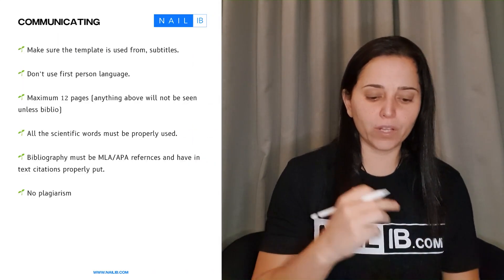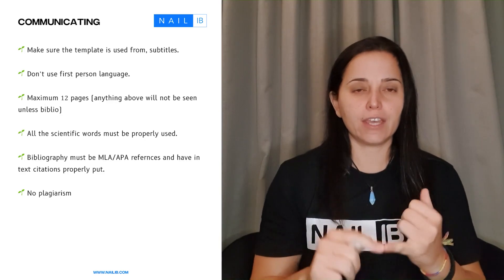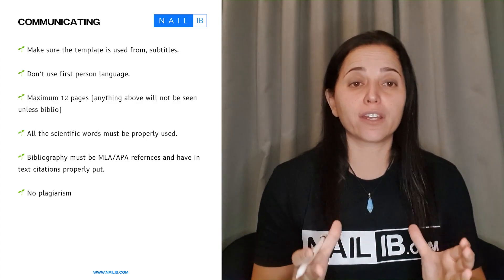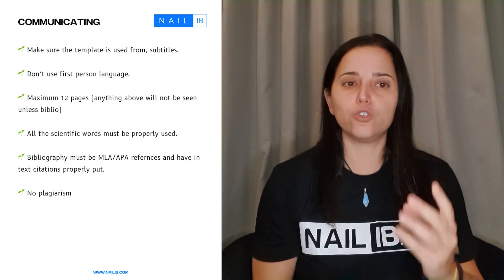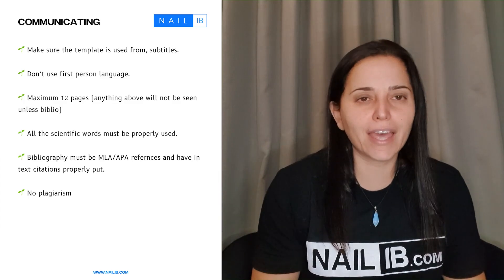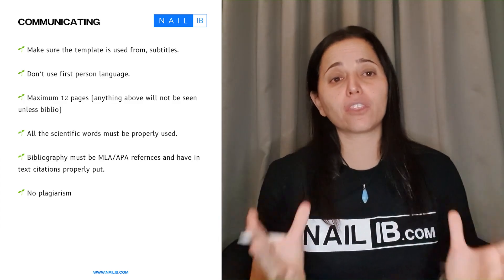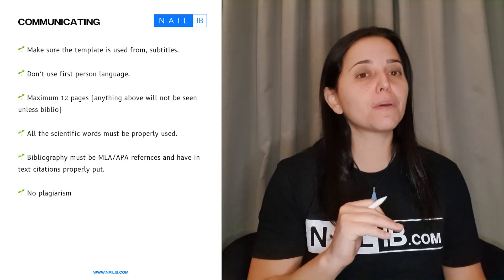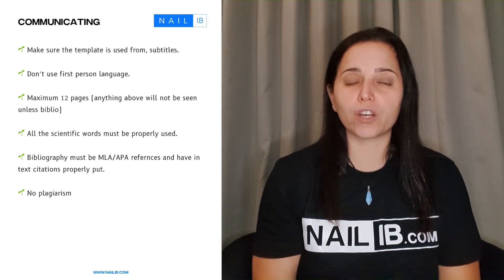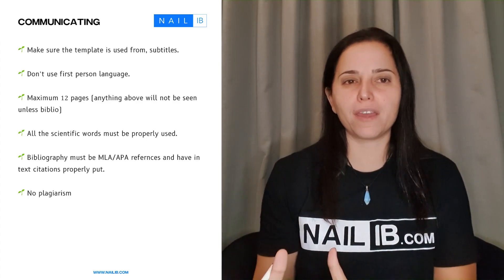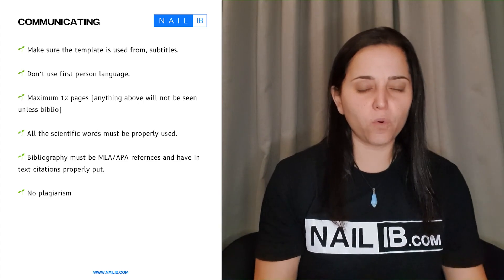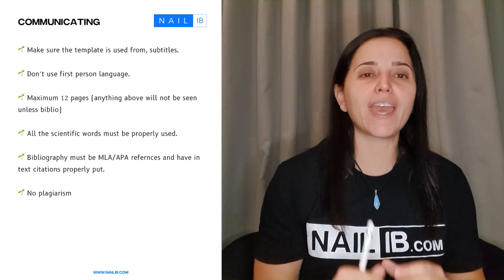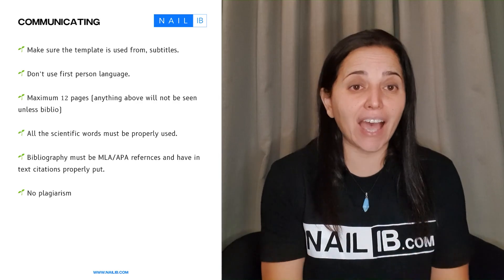When it comes to communication, first there has to be a template with all the subtitles — that's organization and communication skills. Do not use first person language; it has to be in third person. Maximum of 12 pages, however there's a change now which is 3000 words, but you still shouldn't be pushing more than 12 pages. Scientific words have to be used — every time you're using an organism, be it a plant or an animal, it has to be in scientific language and in italics.